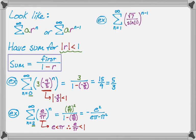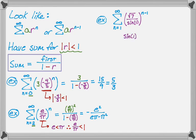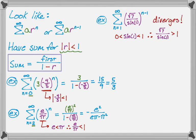Let's look at another: the sum from 1 to infinity of the quantity radical 7 over sine of 1, to the N minus 1. This is a very weird ratio. Since 1 radian is in the first quadrant, sine is positive and always less than 1, so sine of 1 is between 0 and 1. That means radical 7 over sine of 1 is definitely greater than 1, so the absolute value of R exceeds 1 and this series diverges. You might see this type on the multiple choice.